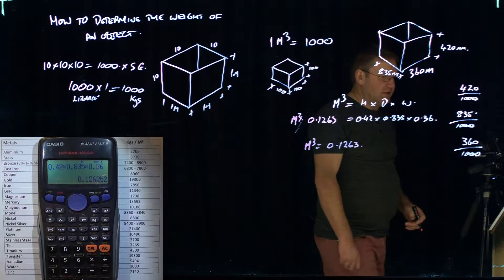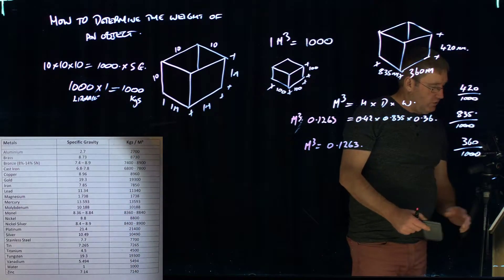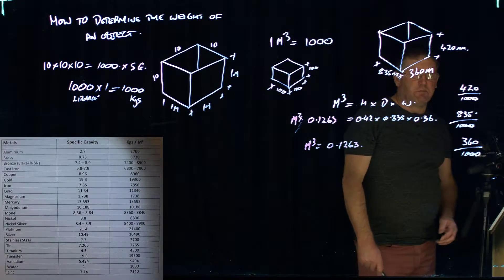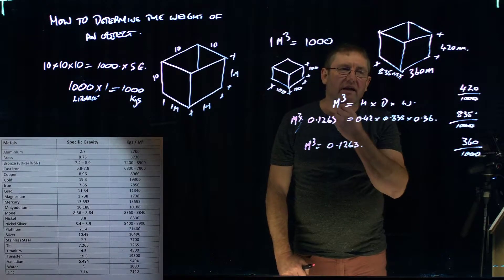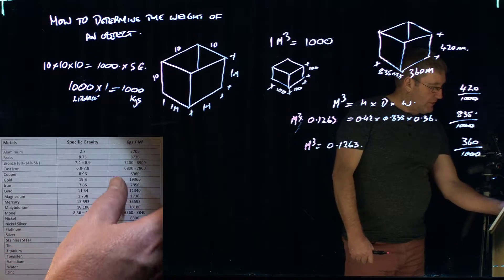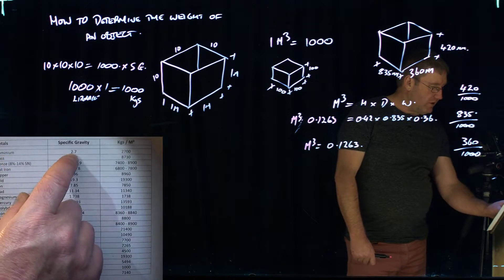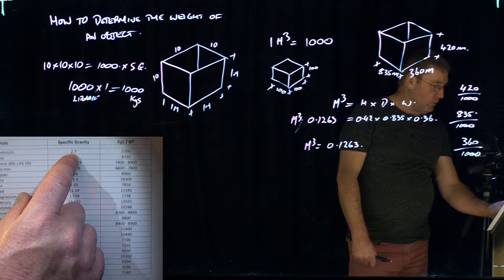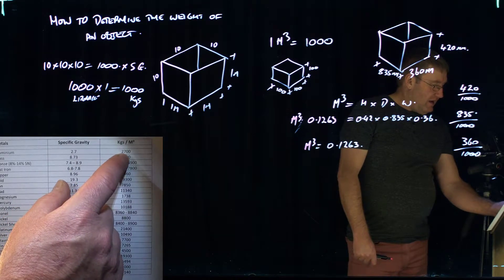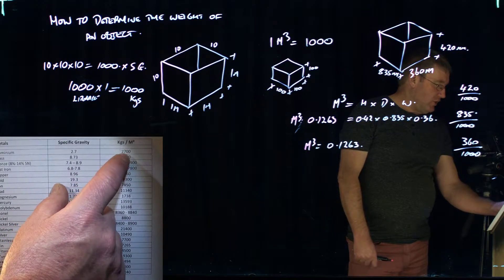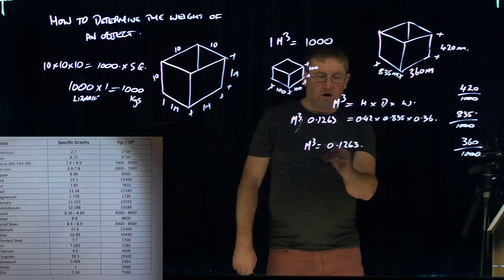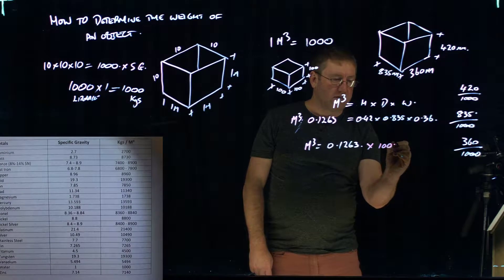And then if we want to do the specific gravity, let's say we want to make that cube that we've got here. Let's say it's a block of aluminum and you're trying to work out the weight of it to stick it on the back of a truck. So if we look at the top of the chart, aluminum's on the first line. It has a specific gravity of 2.7. And kilograms in meters cubed, well it's 2,700 kilograms for a meter cubed. So what we had to do at that point was times it by 1,000.